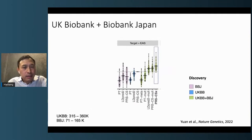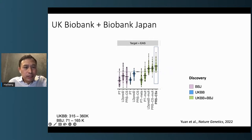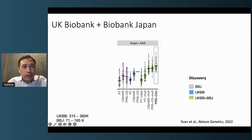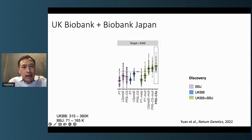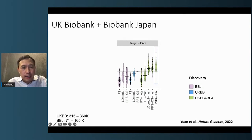We then applied this to biobanks, using the UK Biobank, which is predominantly British individuals, and Biobank Japan, which is individuals of East Asian ancestry. We replicated what we saw in simulation: predicting using a single ancestry is not as good as combining all ancestries, and doing that in a principled manner always gives better performance. This paper has recently been published, and I encourage you to take a closer look if you are interested.